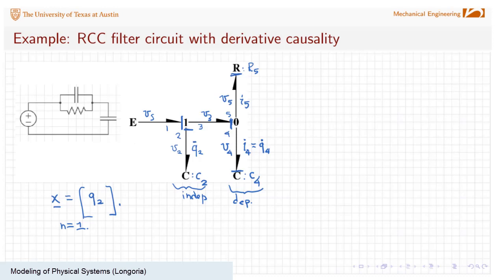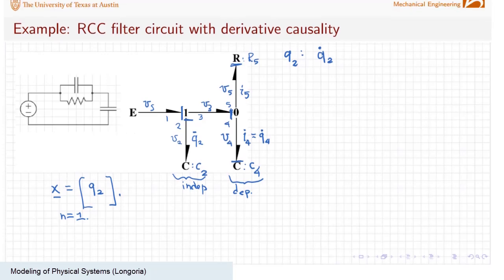Now let's look and see how that impacts writing our equation. Since we only have one state, Q2, I want to direct myself to find the state equation for Q2. Let's say at the end of the day, what we want to know is the voltage across this capacitor, which is V4. Our output equation that we seek is what is V4, given some input voltage Vs. First, let's find our state equation, Q̇2. What is that? Well, it's the rate relation, which is equal to I2. Now, what is I2?